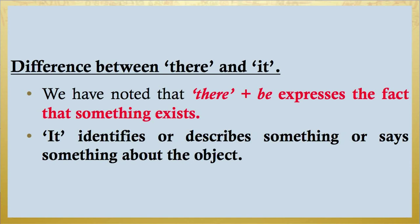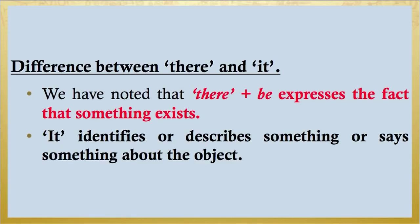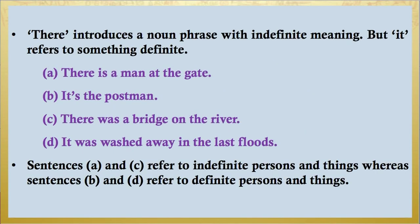Now, coming to the difference between THERE and IT. We have noted that THERE plus BE expresses the fact that something exists, whereas IT identifies or describes something or says something about the object. IT can also function as a formal object when it stands for a whole sentence. For example: 'You have helped me in my difficulties. I shall never forget IT.' Or: 'He wants to beat Ramesh in the test. He won't find it easy.' THERE introduces a noun phrase with indefinite meaning, but IT refers to something definite.